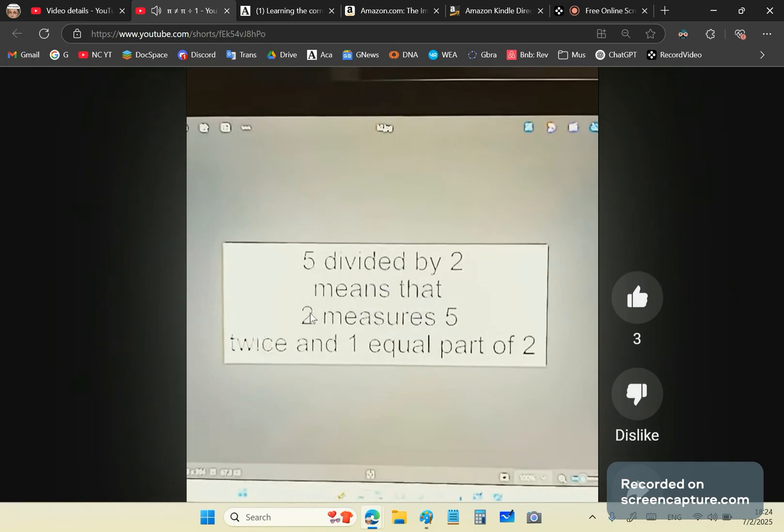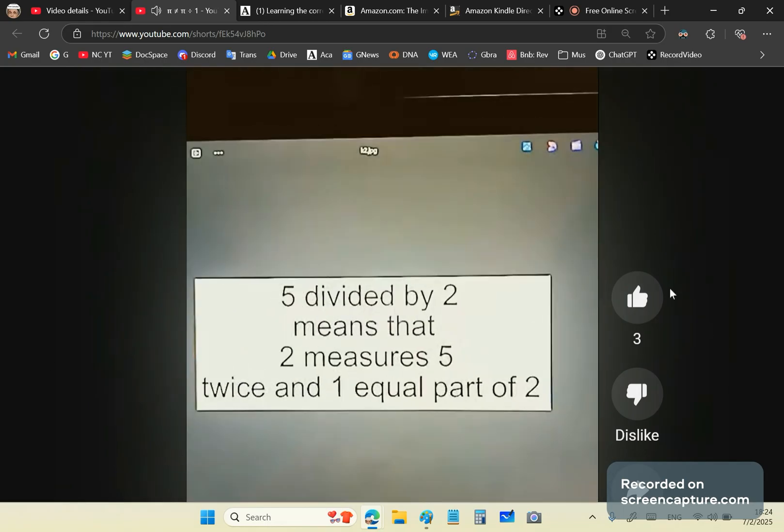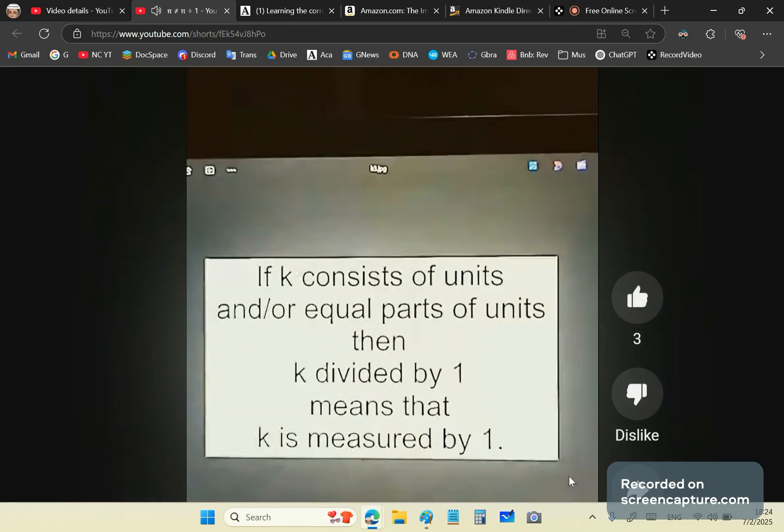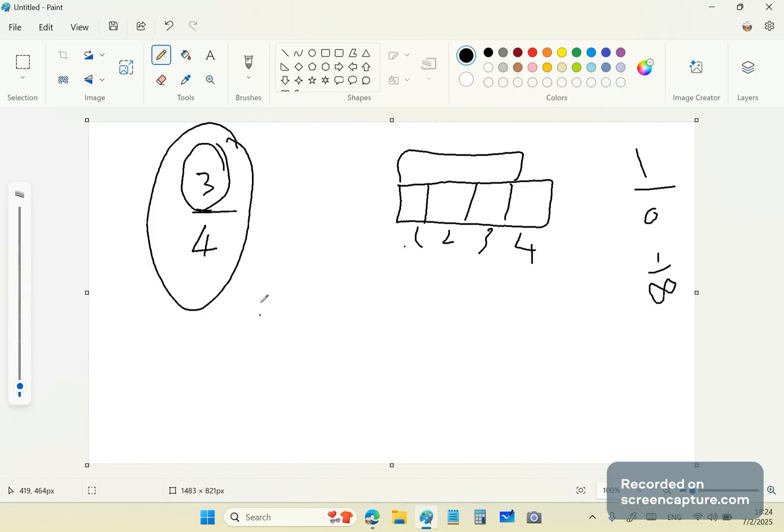We'll see why you cannot say pi divided by, pi is equal to pi divided by one. So if k consists of units and or equal parts of units, by the way, that's how you write any number. This is how all numbers are written, as p over q. There are no other numbers.